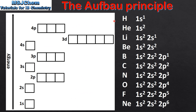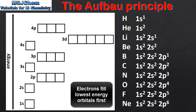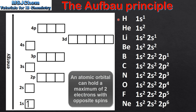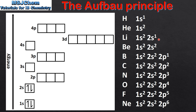Next we'll look at the electron configurations of the elements hydrogen to neon. On the left we have orbital diagrams which represent atomic orbitals. These will fill with electrons as we look at each element's electron configuration. Starting with hydrogen, the electron configuration is 1s1. Next is helium which is 1s2. Moving on to lithium which is 1s2, 2s1. And then beryllium which is 1s2, 2s2.